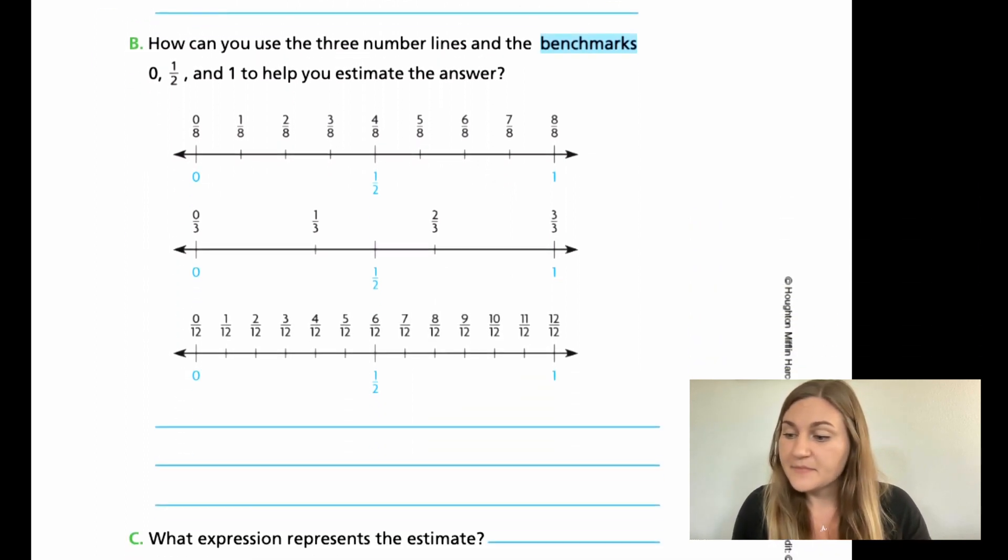For B, how can you use the three number lines and the benchmarks 0, 1/2, and 1 to help you estimate the answer? Go ahead and put each fraction on a different number line for B. Then explain how did that help you estimate your answer. For C, tell me what your estimate is and about how many copper bottles will be used. Go ahead and solve those three problems and then come back so we can work them out together.